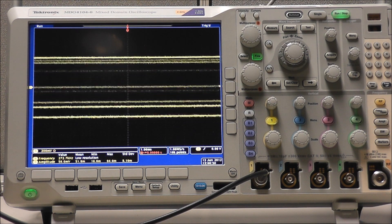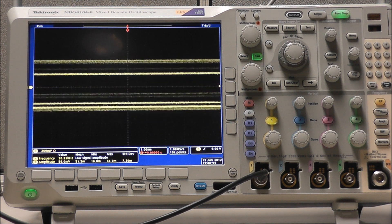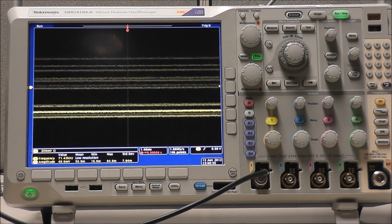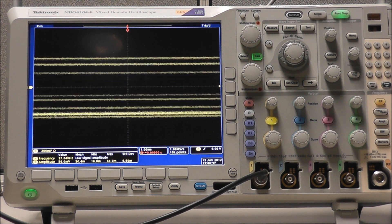When aliasing occurs, one of two things may happen. The oscilloscope can display a waveform with a frequency lower than the actual input waveform, or it will trigger and display an unstable waveform.